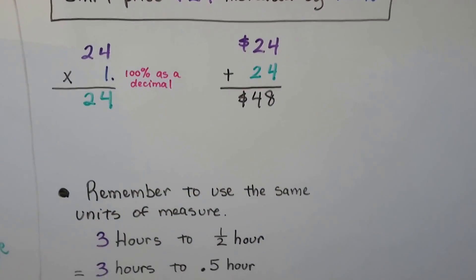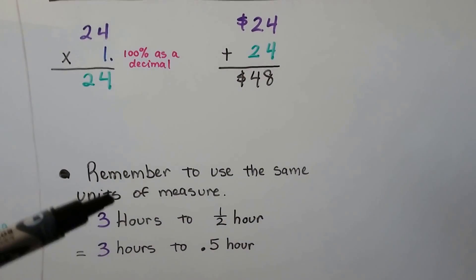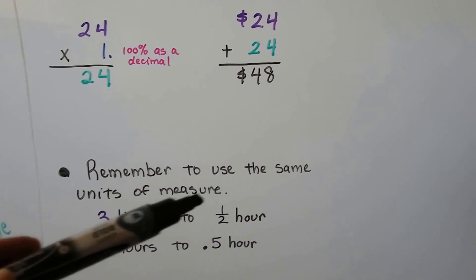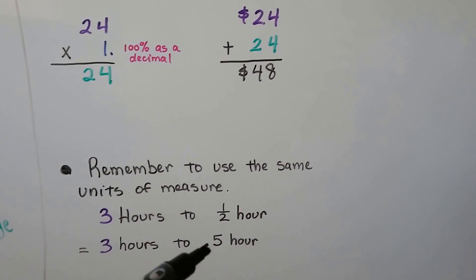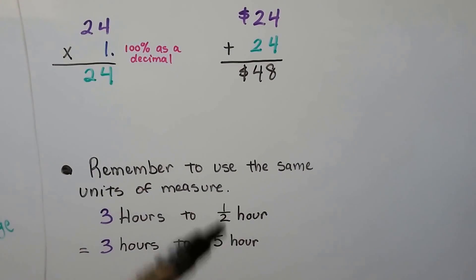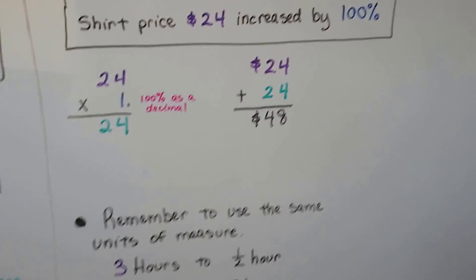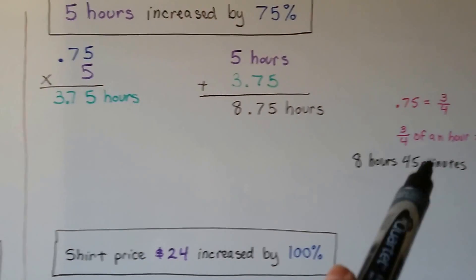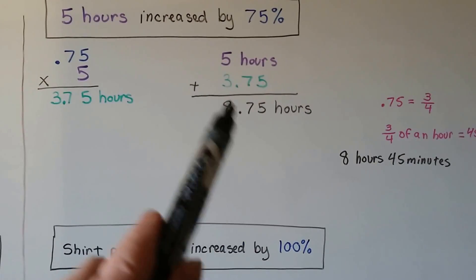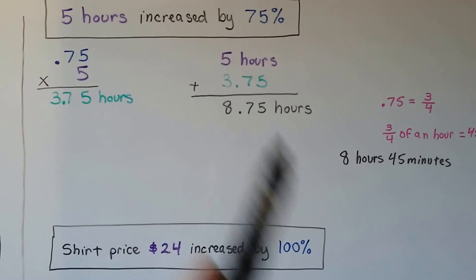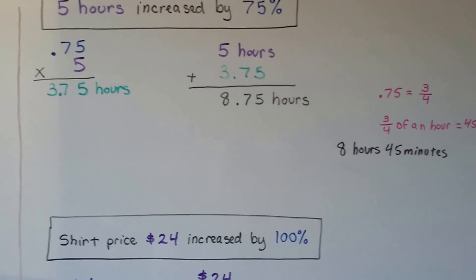So remember to use the same units of measures. If we have 3 hours to a half hour, that's going to be 3 hours to .5 hour. Don't turn it into minutes. Keep your measures the same. Notice how I didn't change it to minutes until the very end. It was still written as a decimal as 8.75 hours.